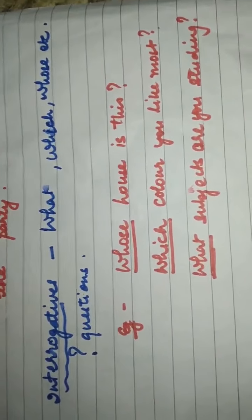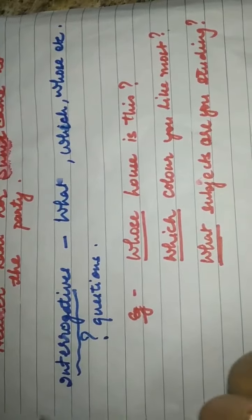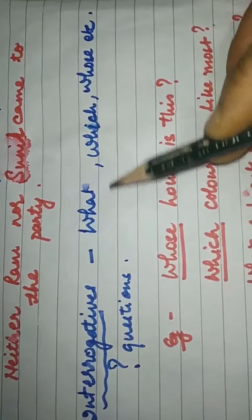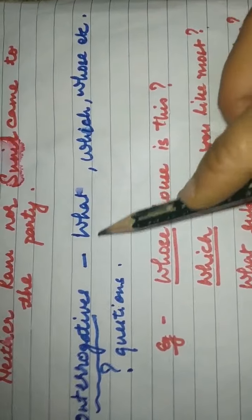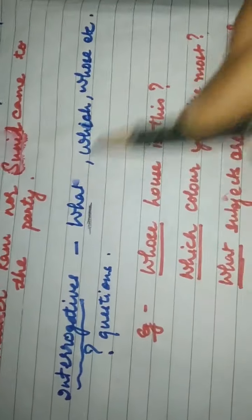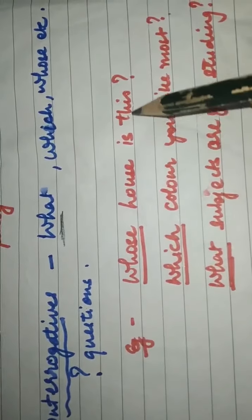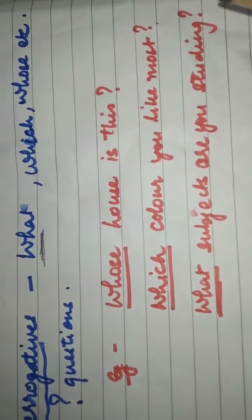Next we have interrogative determiners. 'Interrogative' means questions — the words which ask questions are interrogative words. Those words are 'what', 'which', 'whose', etc. — basically the WH words. Examples: 'Whose house is this?', 'Which color do you like most?', 'What subject are you studying?'